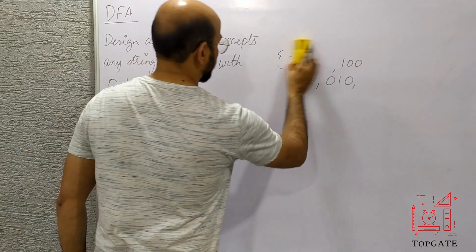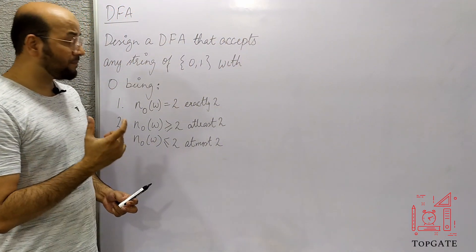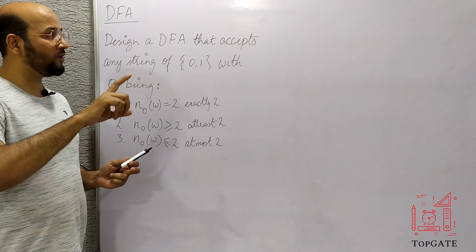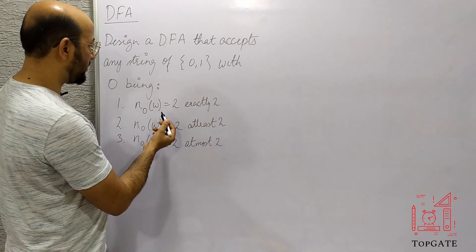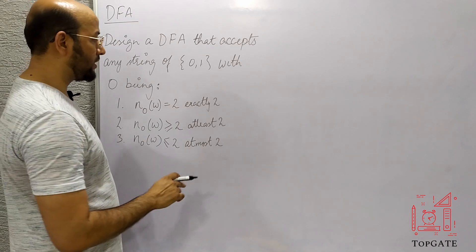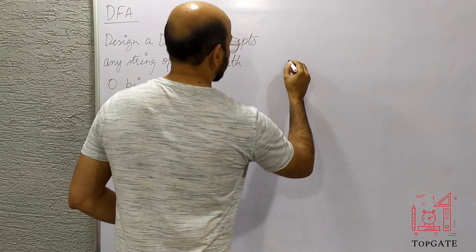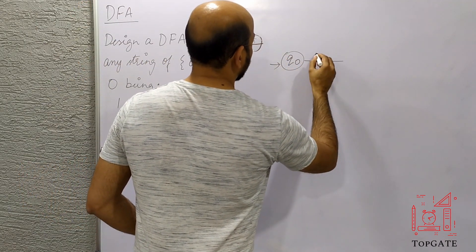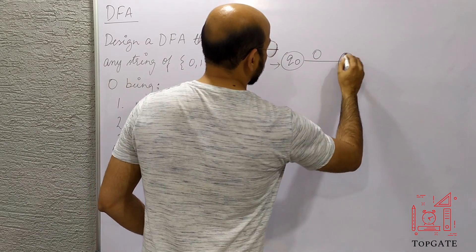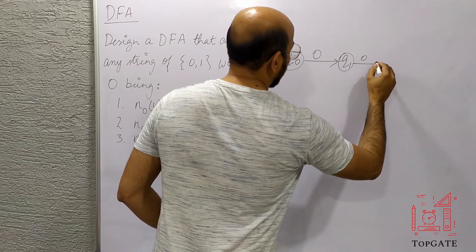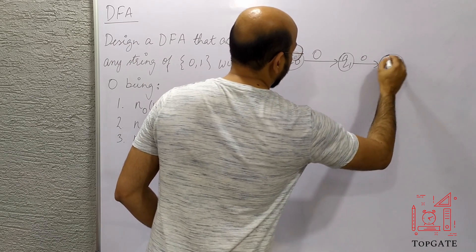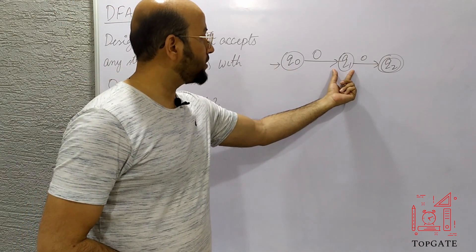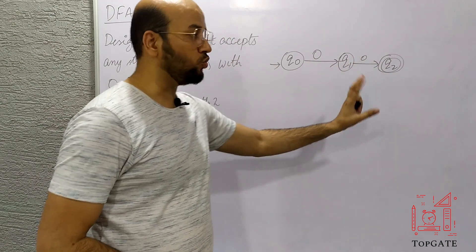Let us design the DFA starting from the minimum string 00. We start with initial state Q0. On input 0, go to state Q1 — number of zeros is 1 so far. On another 0, go to state Q2 — number of zeros is 2 — and make Q2 the final state. We also add self-loops on 1 at Q0, Q1, and Q2, since 1s don't change the zero count.